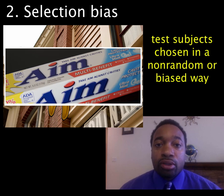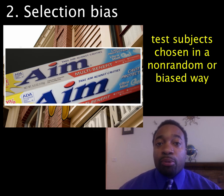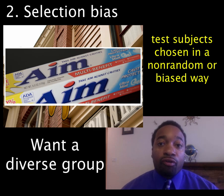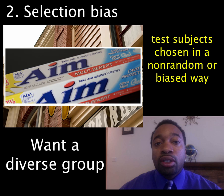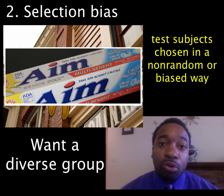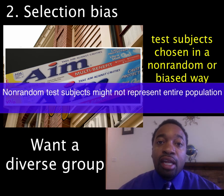Selection bias occurs when test subjects are chosen in a non-random or biased way. Not only do we want a test sample to be large, but we want it to be diverse, because we want it to be representative of the greater population we're trying to find information about. By choosing test subjects in a non-random way — such as from the same dental school — that population might not be diverse enough or representative of the entire population.